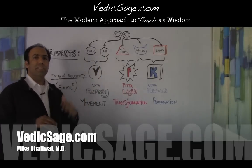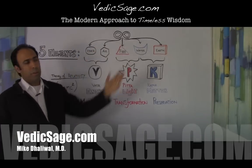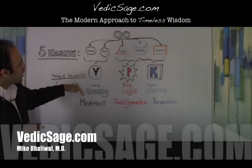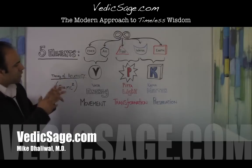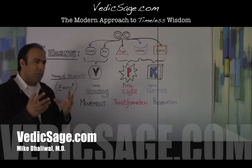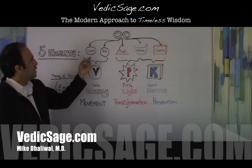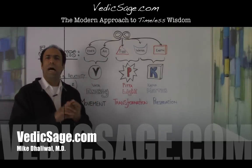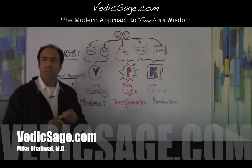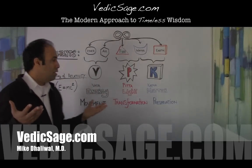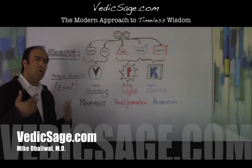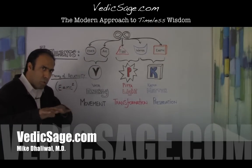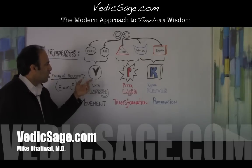the five basic elements: ether, air, fire, water and earth. If we look at vata dosha, it's the organizing principle and organization of qualities from ether and air. For example, vata dosha is thought to be dry, light, cold, mobile, subtle — these dry, light, cold, subtle and mobile qualities of vata are